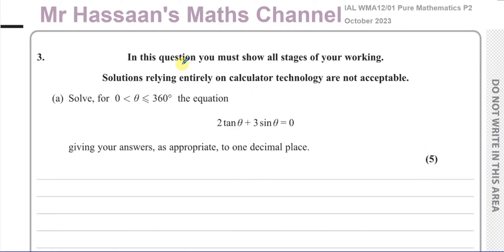You cannot just use a calculator, put this equation in and write down the answers. That will not be acceptable and you won't get any marks for that. If you want to check your answers using the calculator function that's fine, as long as you've shown all your steps and how you got the answer.